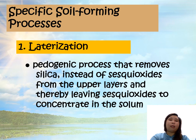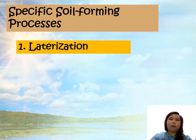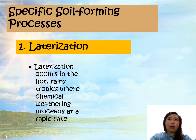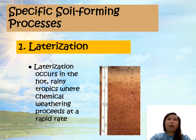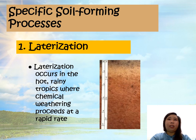Sesquioxides are the collective term for aluminum and iron oxides from the upper layers, thereby leaving sesquioxides to concentrate in the soil. This process of laterization occurs in the hot, rainy tropics where chemical weathering proceeds at a rapid rate. The product of this process are the deep red to bright orange-red soils of the tropics.